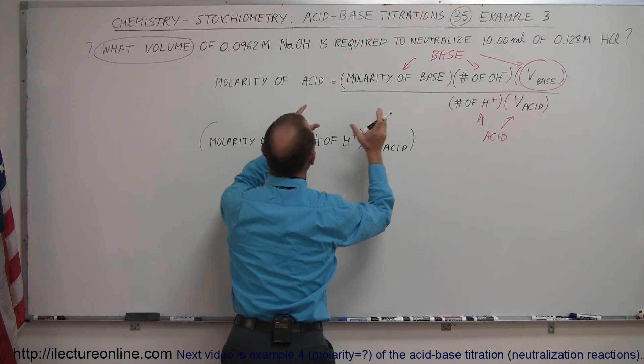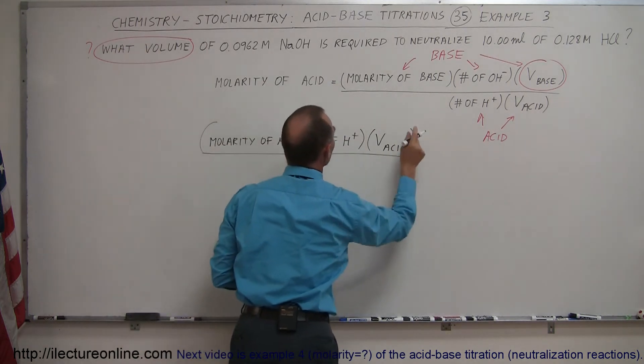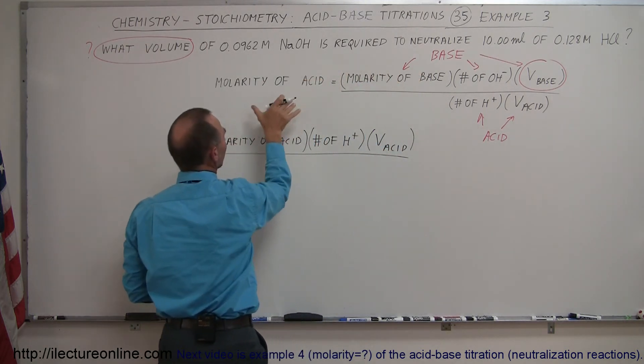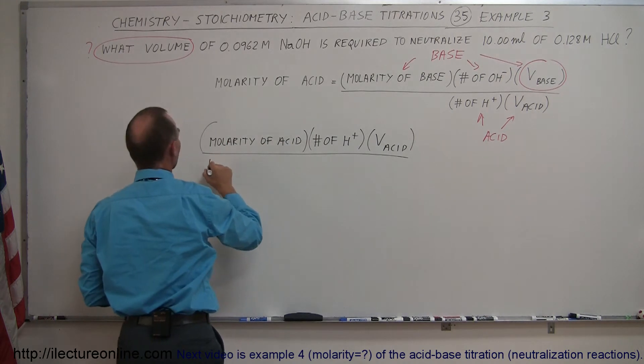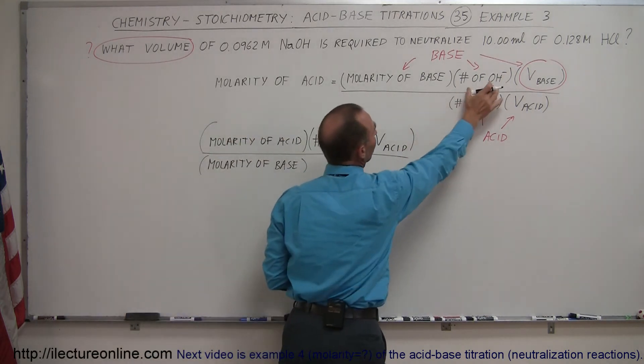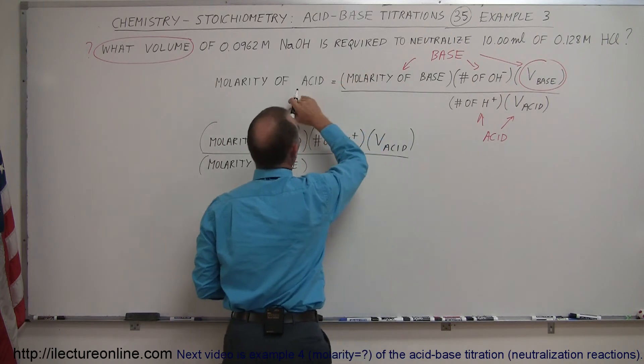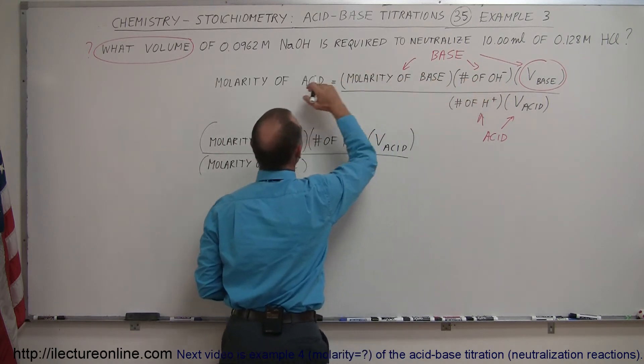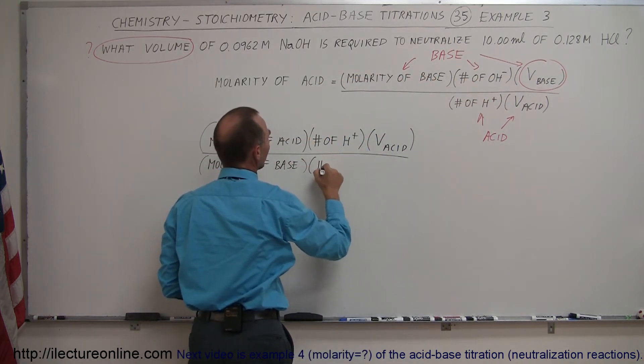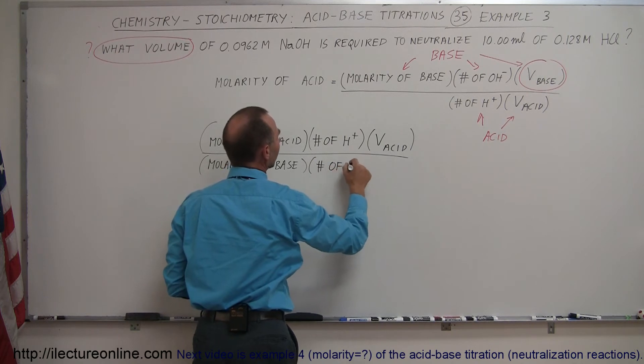Now we take the molarity of the base and move it to the denominator because here we're multiplying. So we move it across, dividing on this side. This is the molarity of the base. And likewise we take the number of hydroxide ions and move it to the other side of the equation. If we're multiplying here, we have to divide on this side. So that would be the number of hydroxide ions.